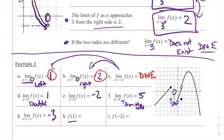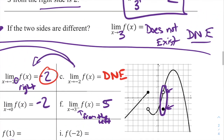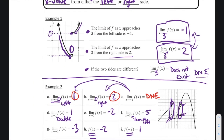For part H: f of 1. Notice this doesn't have a limit statement — we're not talking about limits from the left or right. f of 1 simply asks: what is the actual output of this function when x equals 1? Looking at the graph at x equals 1, there's an open circle and a filled-in dot. The open circle tells me that point doesn't actually exist, so we pick the filled-in one, which has a height of negative 2. So f of 1 equals negative 2. For part I: f of negative 2 — similarly, there are two things at x equals negative 2. The open circle is undefined at that point, so we pick the filled-in one, which has a height of 1. So f of negative 2 equals 1.